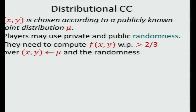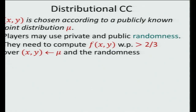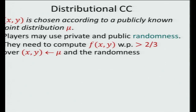More specifically, for the purposes of this talk, we care about what we call distributional communication complexity. In distributional communication complexity, there is an underlying distribution mu and we assume that the pair of inputs x and y are drawn according to mu. We allow the players to use public and private randomness and we only ask them to compute f with high probability — say with probability two-thirds over the selection of inputs and randomness.